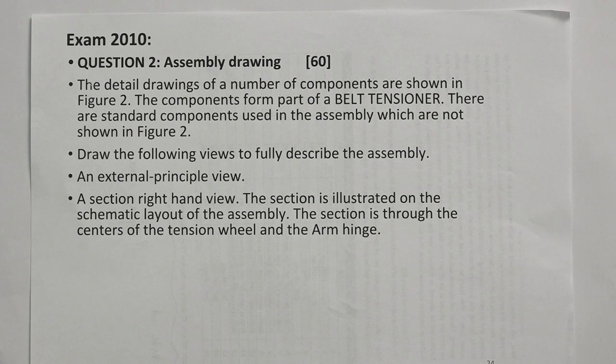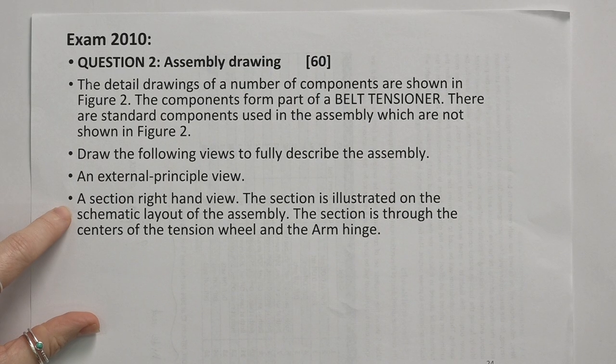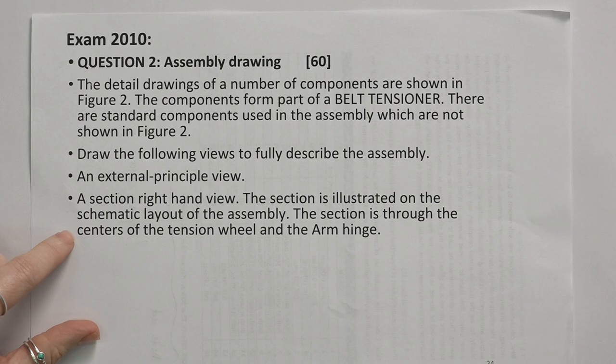The next example is from an exam from 2010 of an assembly drawing. The question reads that there are two views that we need to draw. First they ask for an external principle view and a section right hand view. The section is illustrated on the schematic layout of the assembly through the center of the tension wheel and the arm hinge.